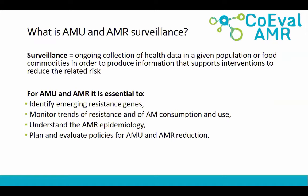So what is AMU and AMR surveillance? Surveillance is the ongoing collection of health data in a given population or in given food commodities, in order to produce information that will support interventions aiming at reducing the related risk. Regarding AMU and AMR, surveillance is essential to first identify emerging resistant strains, but also to monitor trends of resistance as well as antimicrobial consumption and use. It is also very useful to better understand the epidemiology of AMR, as well as to plan and evaluate policy for AMU and AMR reduction.